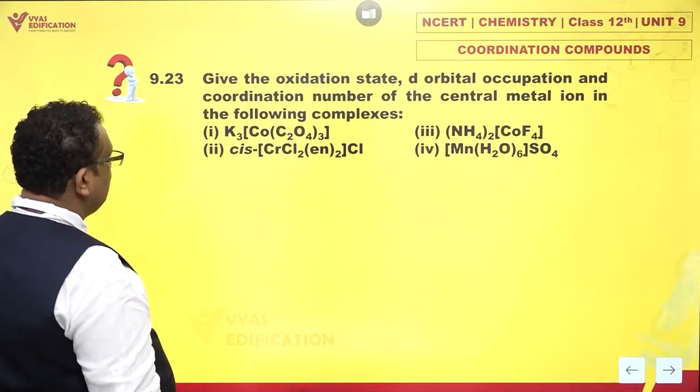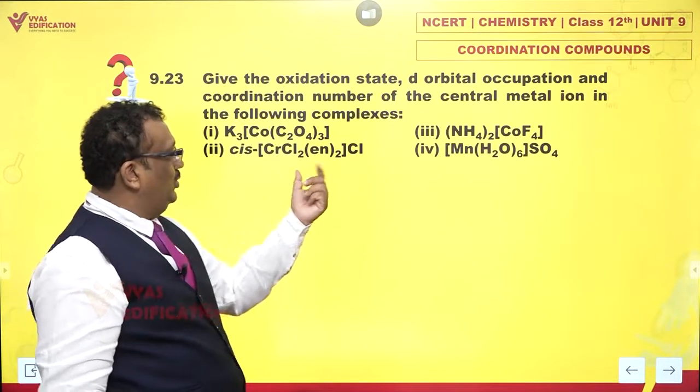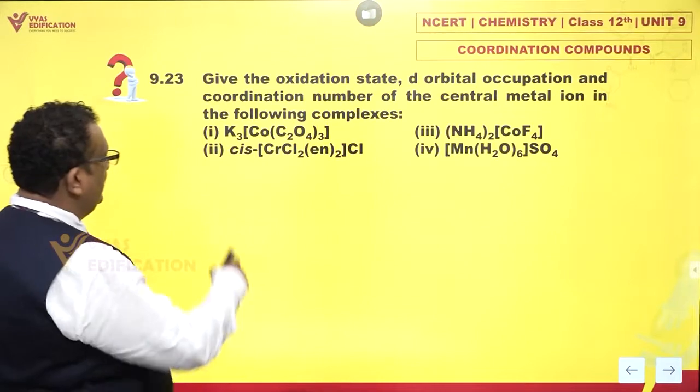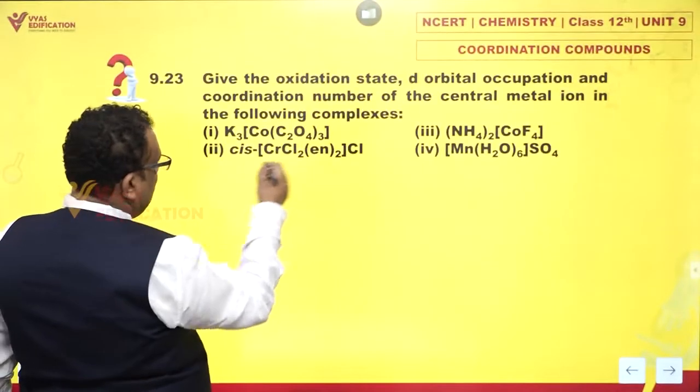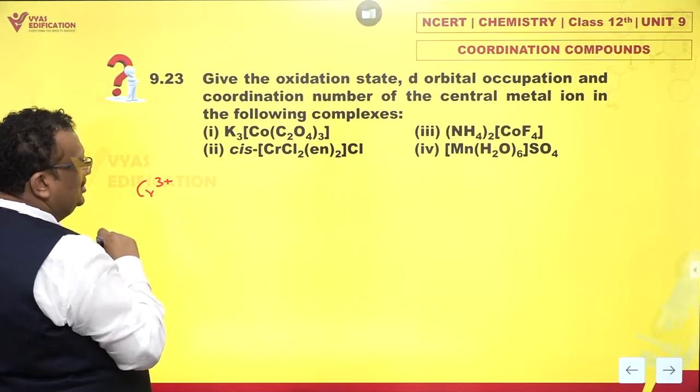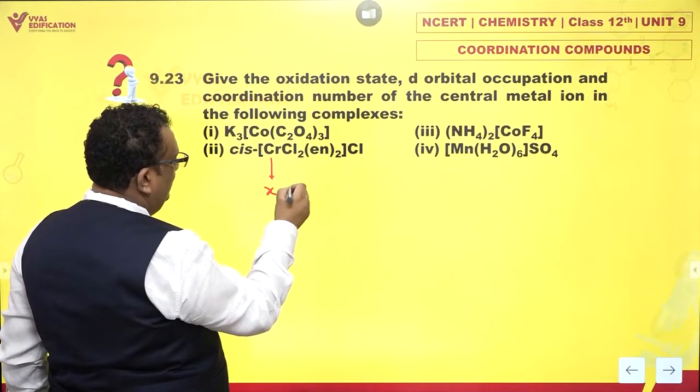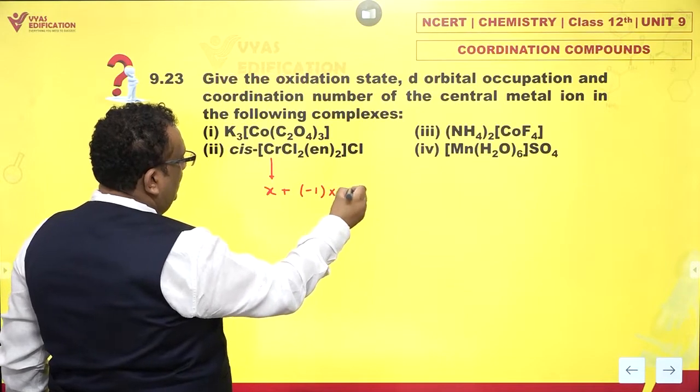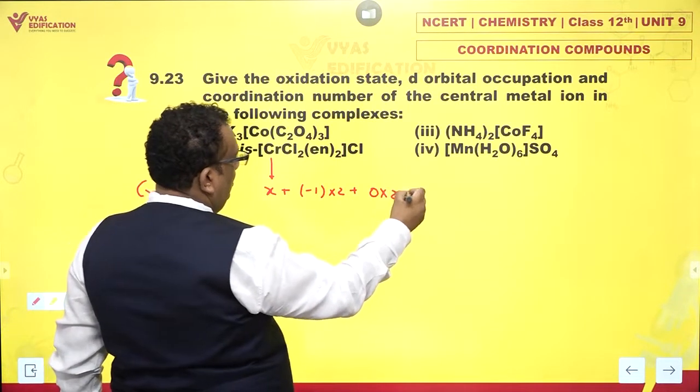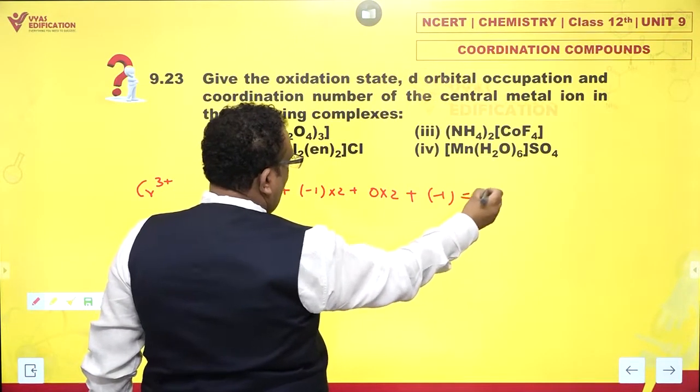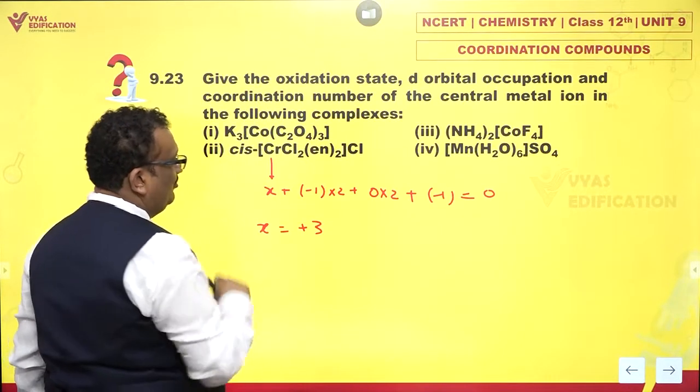And this one says, cis-[CrCl2(en)2]Cl. Central atom would be, if you just check oxidation numbers, it is chromium 3+. How exactly did I get it? Well, say chromium is X, chlorine is -1, there are 2, En is 0 into 2, and chlorine is -1, total is 0. So, X will come out to be +3.